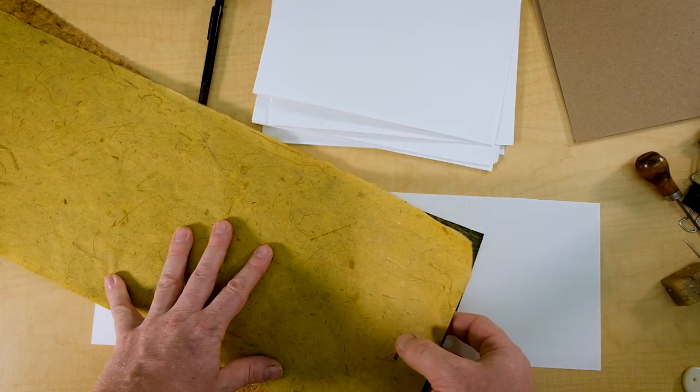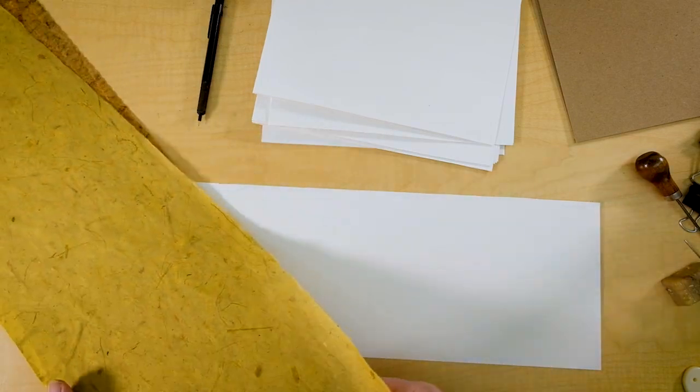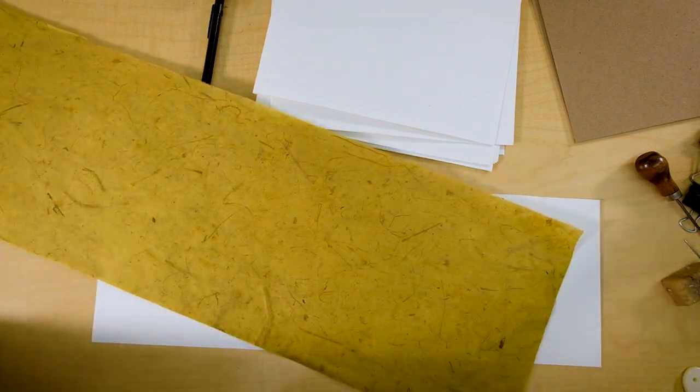This year I tried some lighter paper. This was a banana paper also from Black Ink. It was smoother and easier to glue, but we'll see if it holds up in the long term.